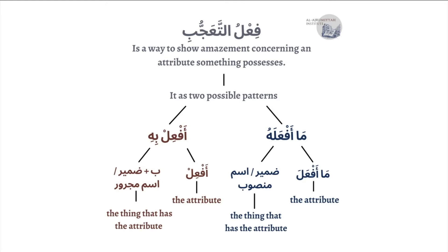Similarly, جميل goes on the pattern of أَجْمِلْ. And then I put the thing or person that has that attribute in an amazing way after the حرف جر بِـ. So أَفْعِلْ is going to represent the attribute, and the word that comes after the حرف جر — or the pronoun — is going to be the thing that has the attribute in an amazing way. Let's see some examples.